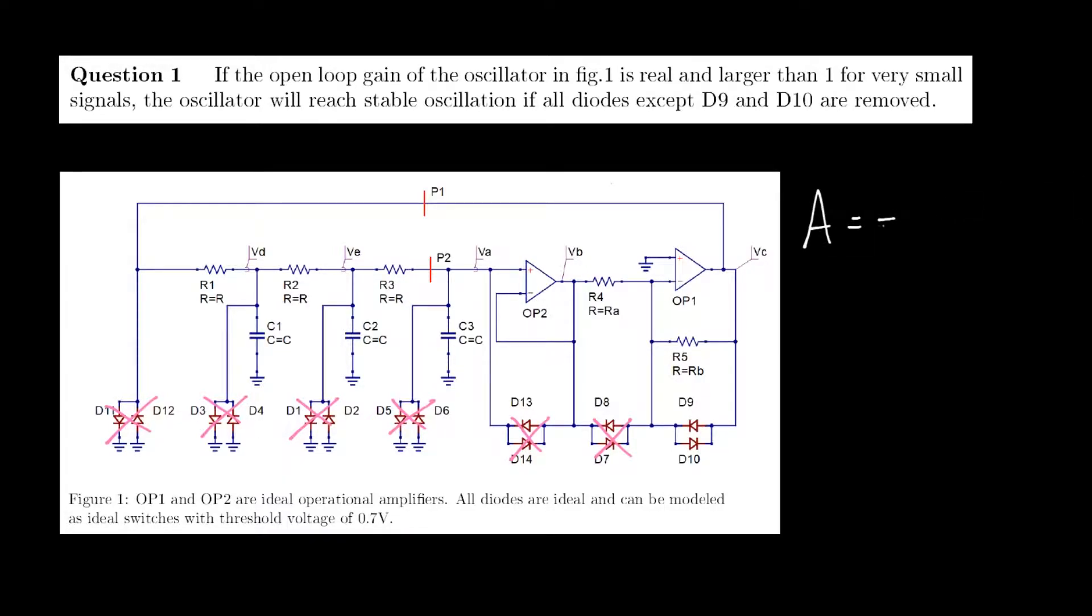is given by minus R5, which is the resistance along the path from the output to the inverting input, over R4, which is the resistance from the inverting input to the input of this amplifier configuration.